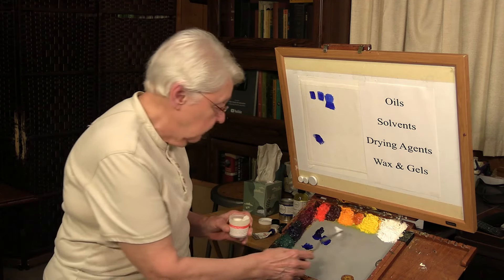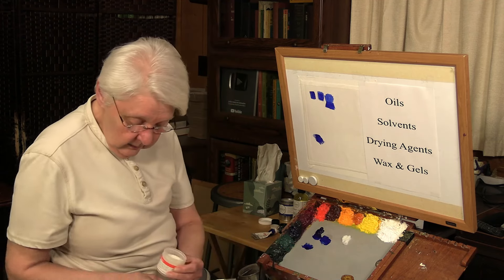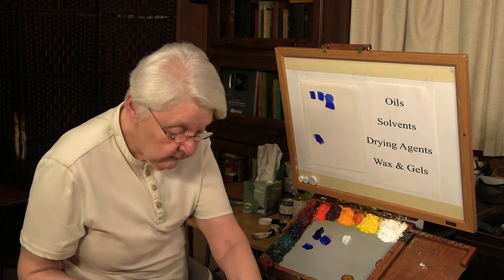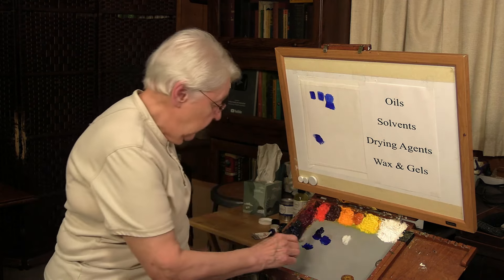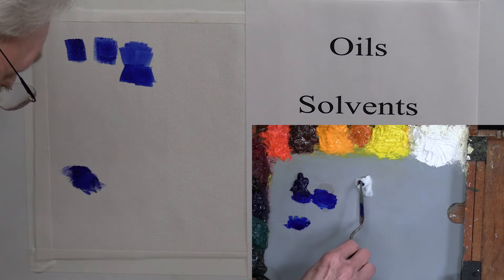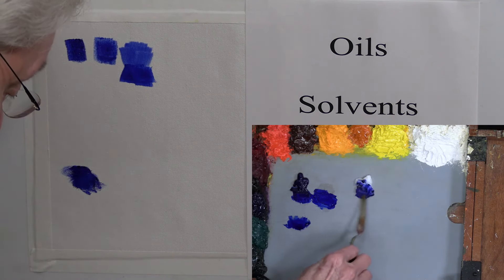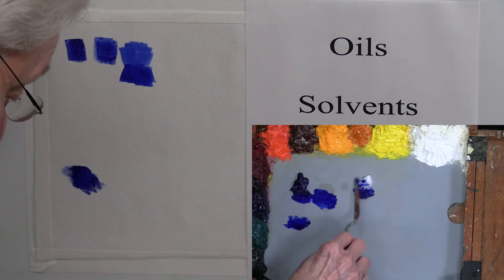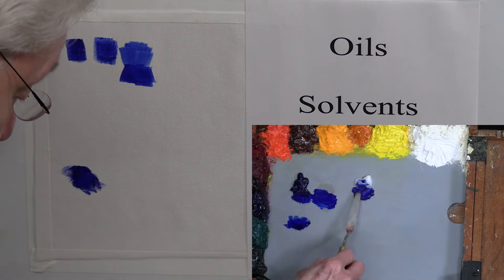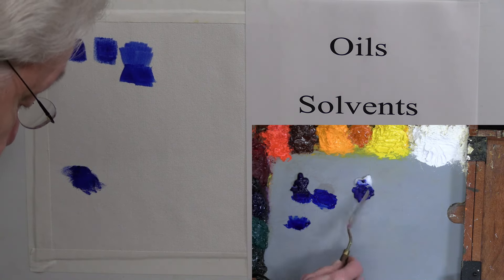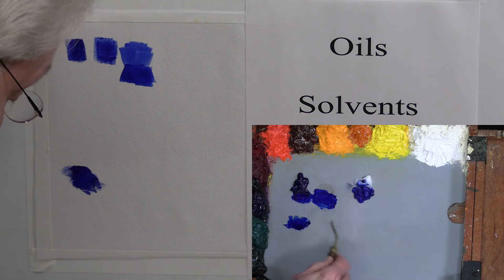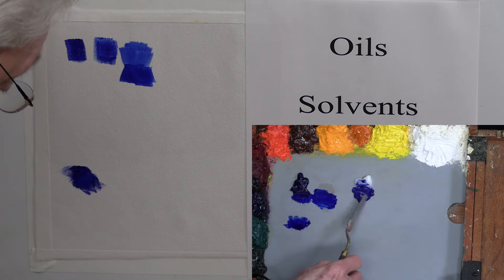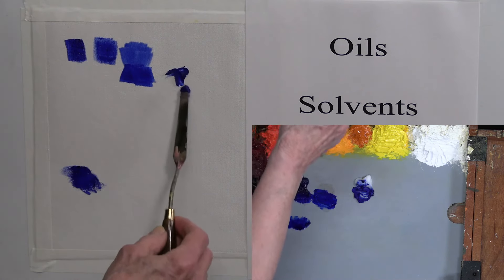I'll put cold wax medium directly on the palette. The amount that goes in there is important. You want to mix it in your paint — certainly no more than 50% wax and 50% paint. You can see how it instantly changes the viscosity of the paint and makes it very thick. For palette knife painting, this is wonderful.